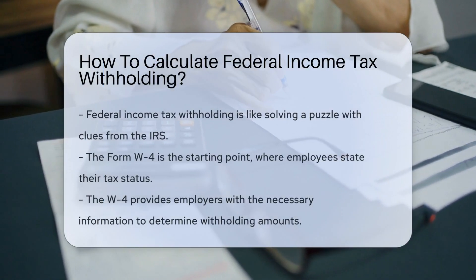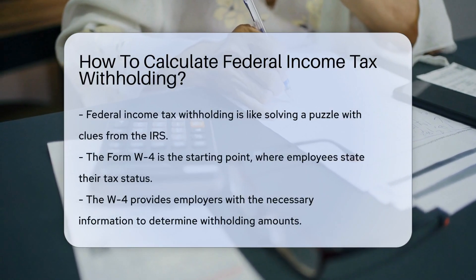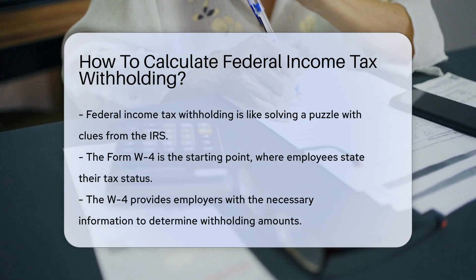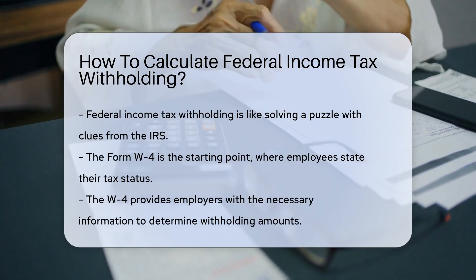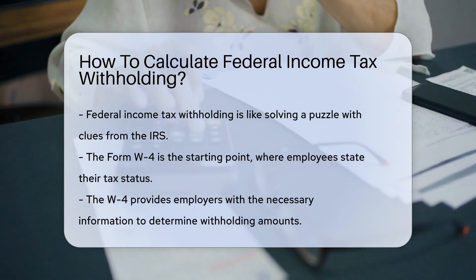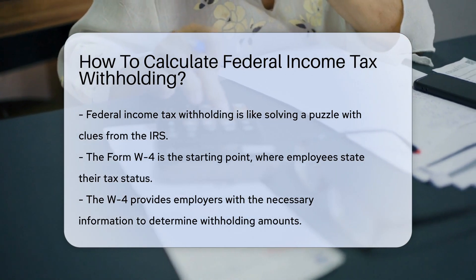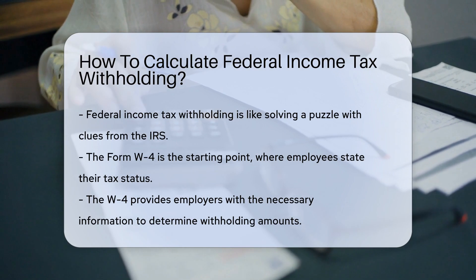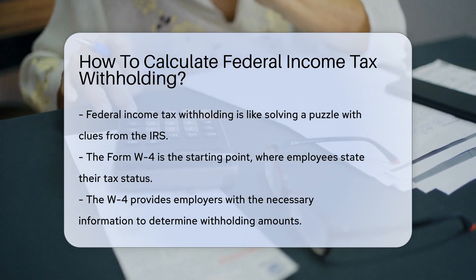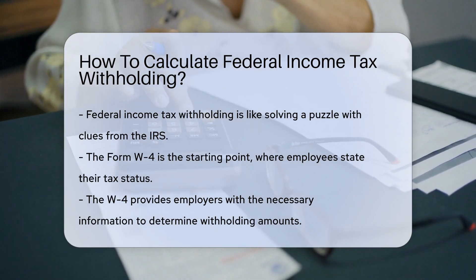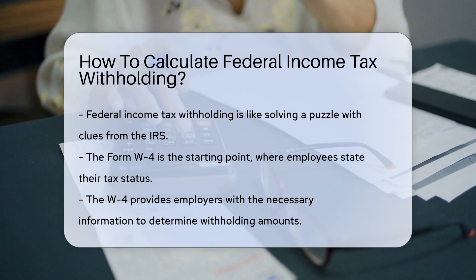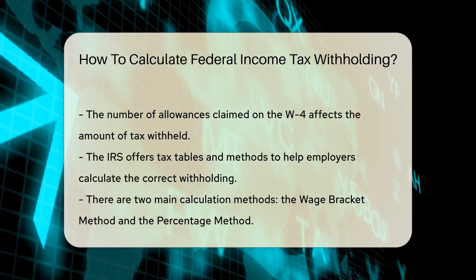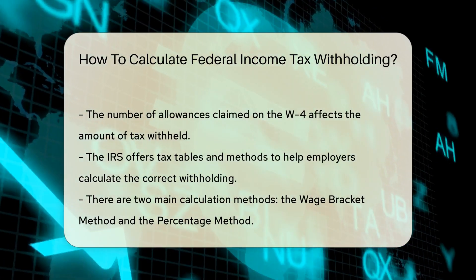Calculating federal income tax withholding can seem like unraveling a mystery, but fear not — the clues lie within the IRS's own treasure trove. The starting point of this adventure is the Form W-4, an employee's declaration of tax status. Employees fill out the W-4 when they start a new job. It's like a roadmap for employers, telling them how much tax to withhold based on income, marital status, and other factors.